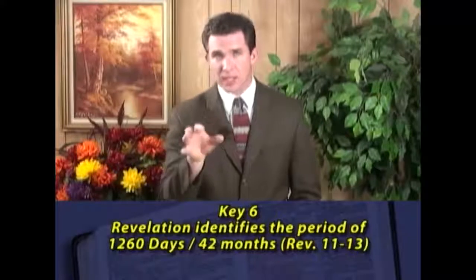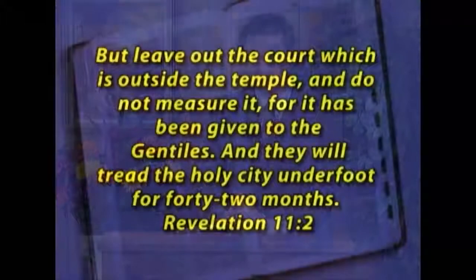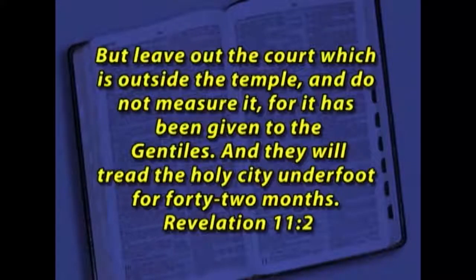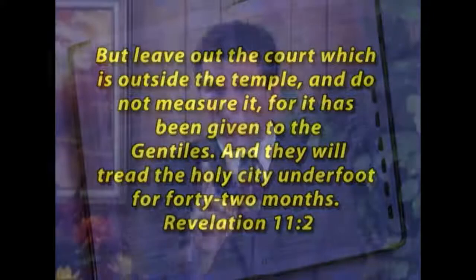Another key to unlock the book of Revelation: Revelation identifies the period of 1,260 days, 42 months, or 'time, times, and half a time' — three and a half years. This period is important because it is the period of time for which this book is written. Revelation 11, verse 2 says: 'But leave out the court which is outside the temple, and do not measure it, for it has been given to the Gentiles, and they will tread the holy city underfoot for 42 months.' 42 months is 1,260 days or three and a half years. In Revelation 11 through 13, this is the climactic scene of persecution and the beginning of victory in the book.